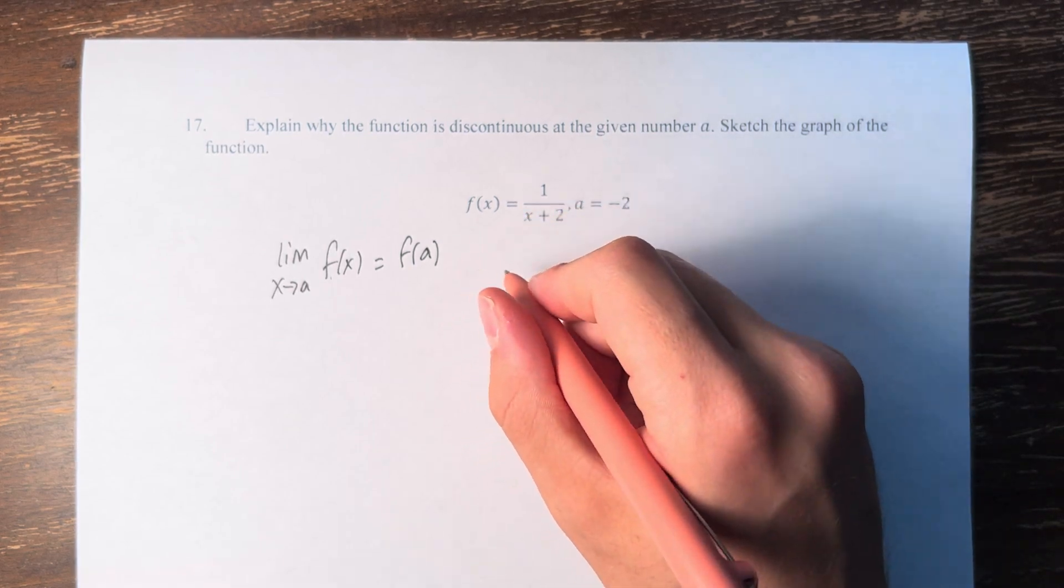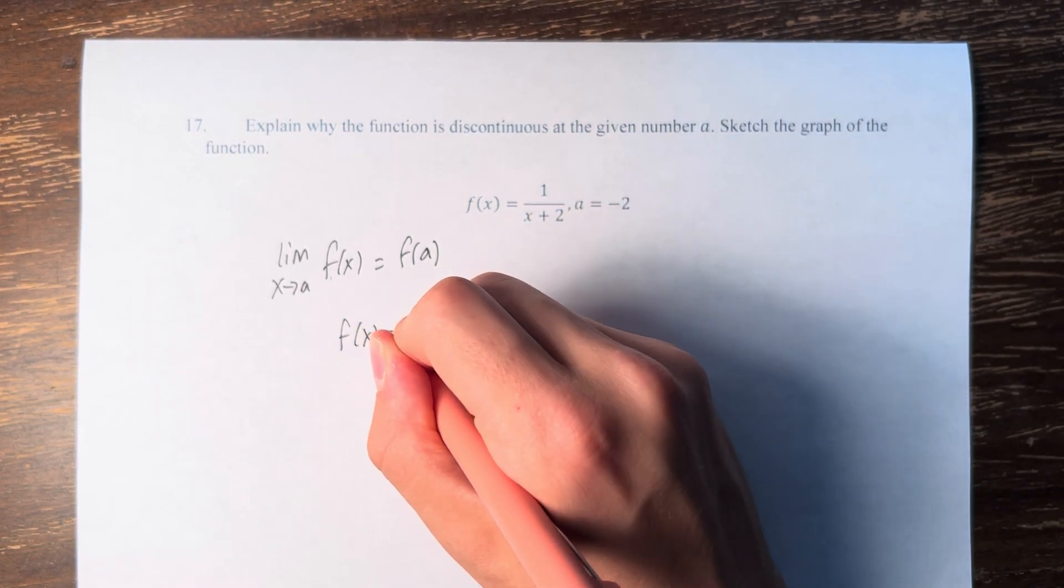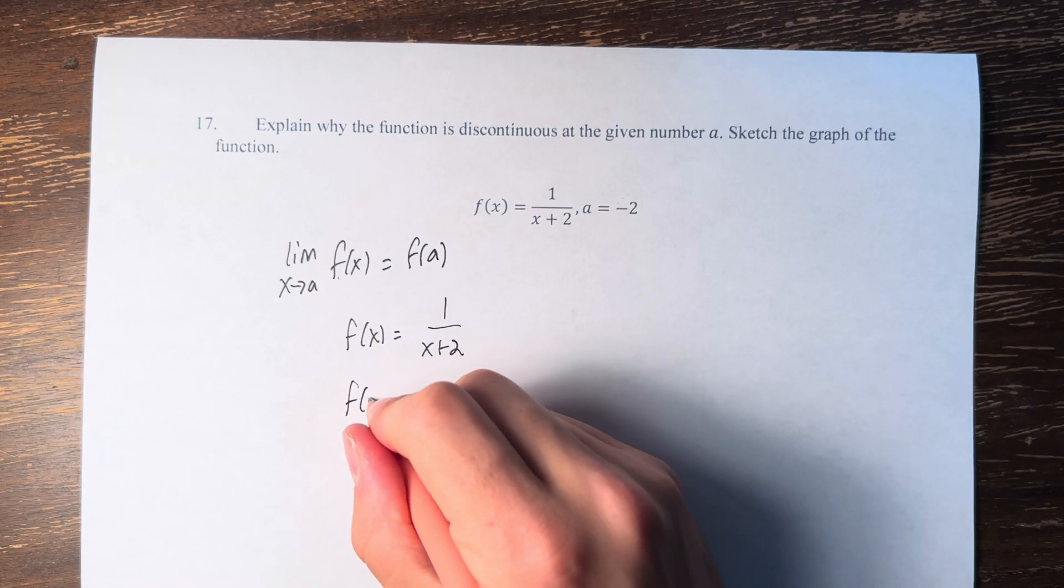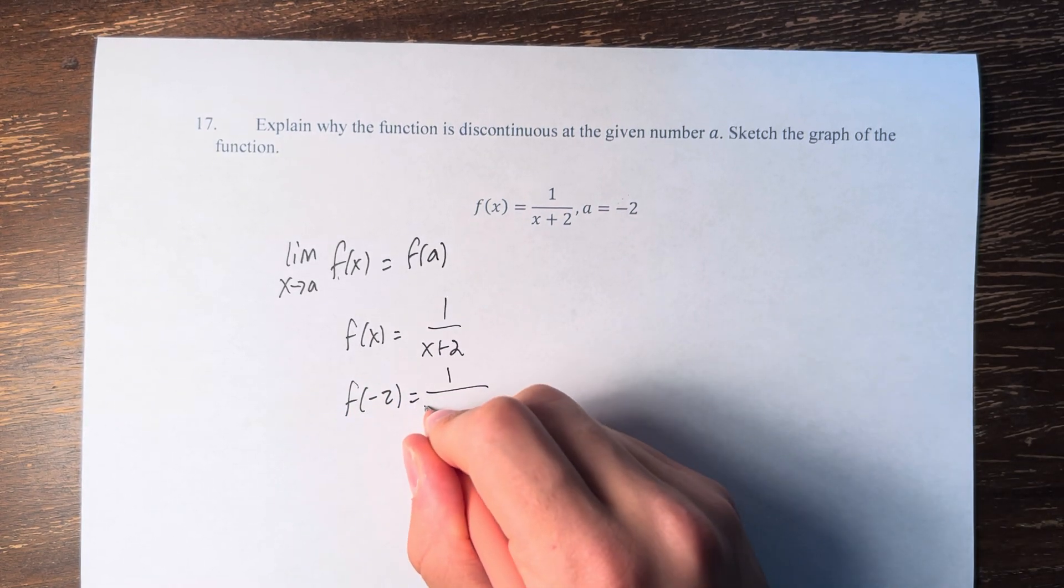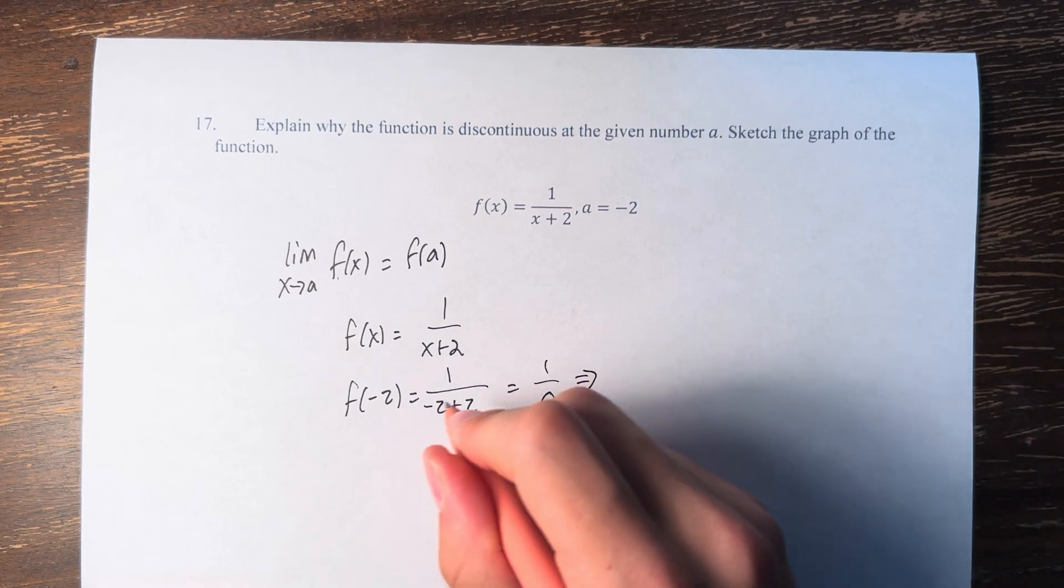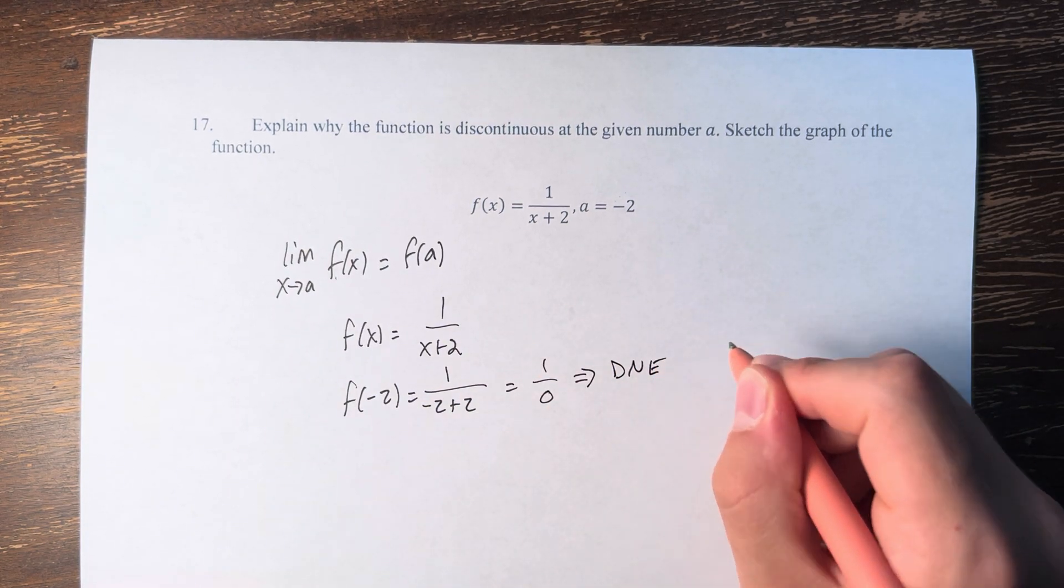What is f(a) here? Well, f(x) is equal to 1 over x plus 2, and a is negative 2. So, f of negative 2 is equal to 1 over negative 2 plus 2. This is 1 over 0. Therefore, f of negative 2 does not exist.